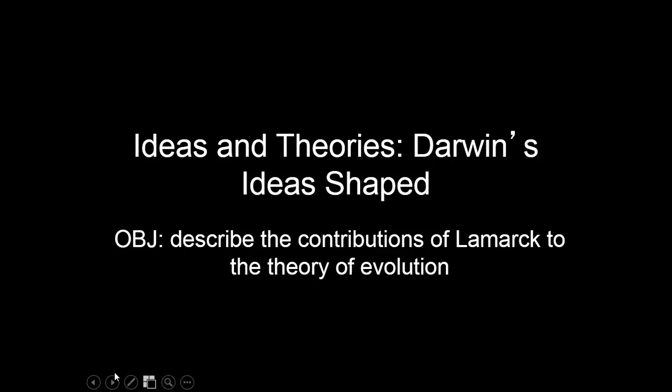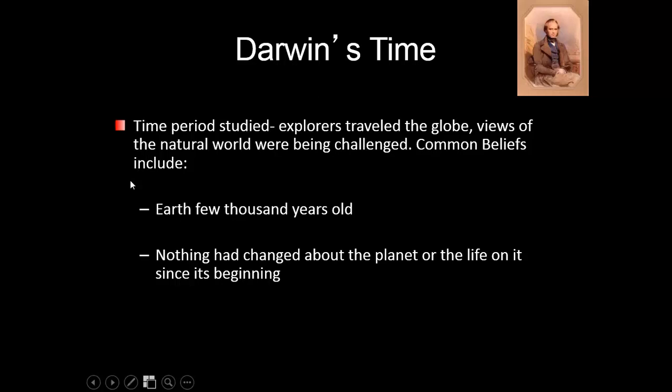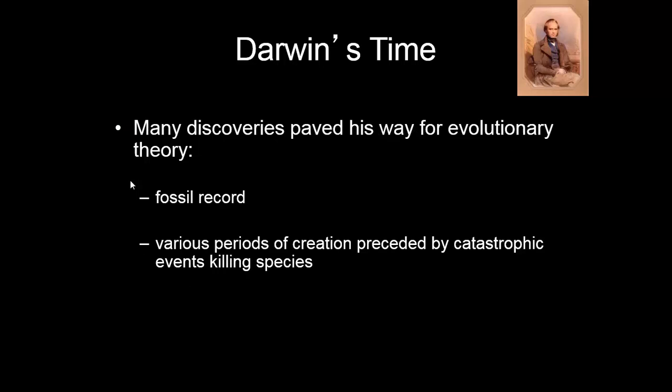Our objective is to describe the contributions of Lamarck to the theory of evolution. In Darwin's time, it's the Industrial Revolution — England is doing quite well, branching out, discovering things, and Darwin is a part of this movement. Common beliefs of the day held that the Earth was much younger than we think it is now — people thought it was about a few thousand years old, and nothing had changed about the planet or life on it since its beginning. Darwin is obviously thinking the Earth is much older, and that life actually has changed.